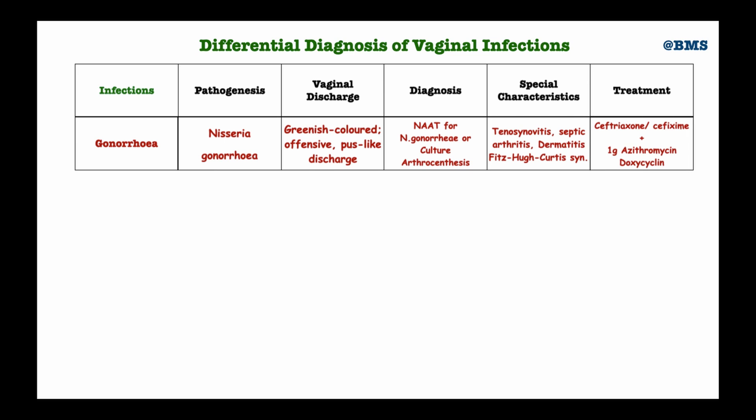We treat gonorrhea with ceftriaxone as the first line for uncomplicated gonorrhea — ceftriaxone intramuscularly plus azithromycin. Alternatively, we can give cefixime plus azithromycin. If the gonorrhea is complicated — with tenosynovitis, septic arthritis, dermatitis, or Fitz-Hugh–Curtis syndrome — we combine ceftriaxone plus doxycycline. For disseminated gonococcal infection we can still use ceftriaxone and azithromycin, but we may also need to drain mucopurulent fluid from the joints.